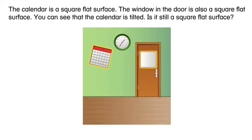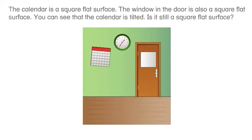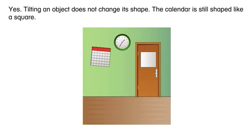Is it still a square flat surface? Yes. Tilting an object does not change its shape. The calendar is still shaped like a square.